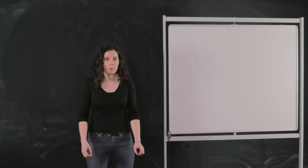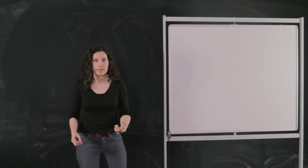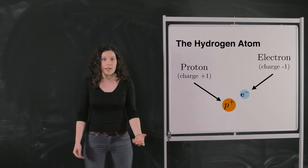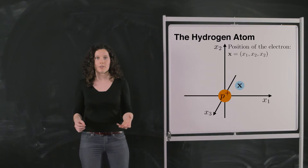Let us start with the simplest system one can imagine, namely the hydrogen atom. This atom has only one proton and one electron. The proton has a positive electric charge and the electron has a negative charge. For simplicity, and because we don't want to have a lot of constants, we choose a unit system in which the elementary charge is equal to 1. Hence, the charge of the proton is +1 and the charge of the electron is -1. For simplicity, we fix the position of the proton at the origin and study only the evolution of the electron.